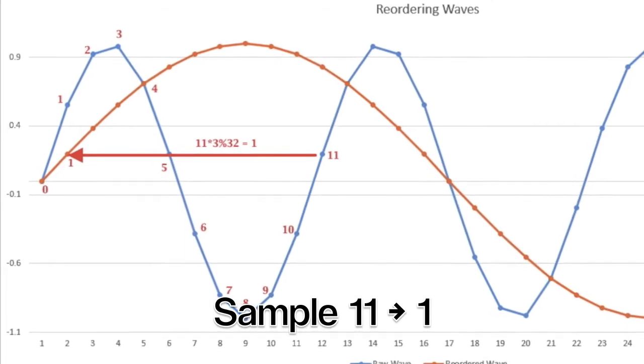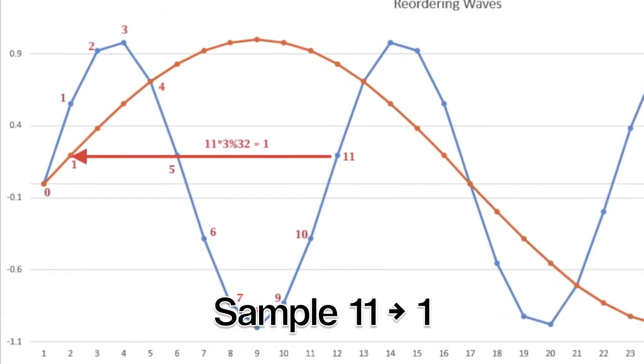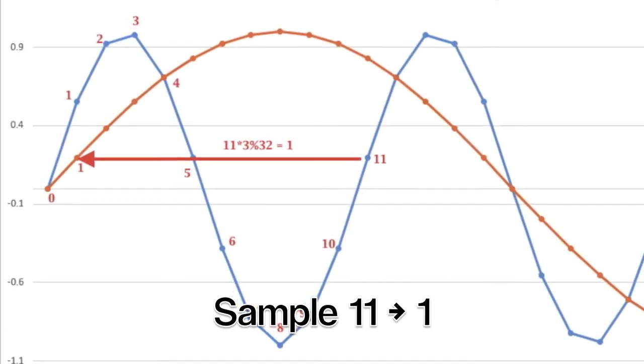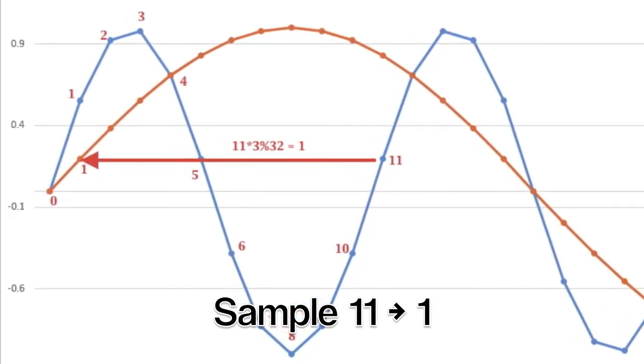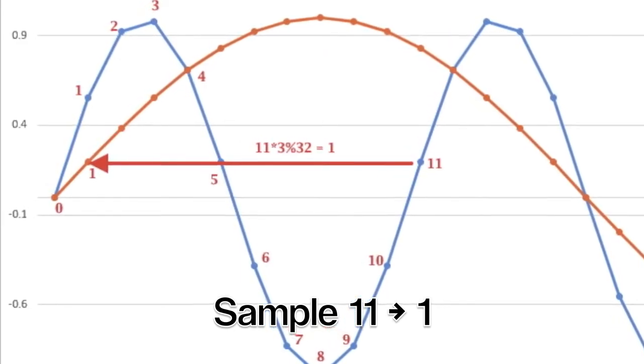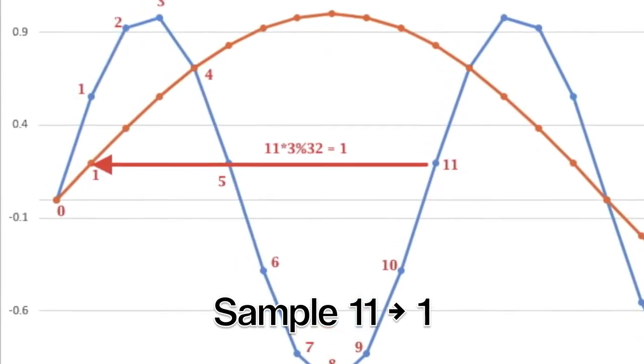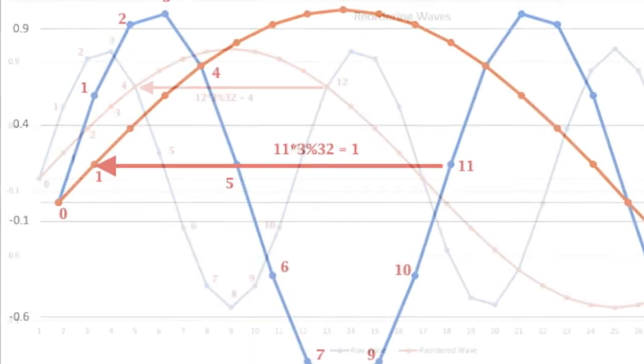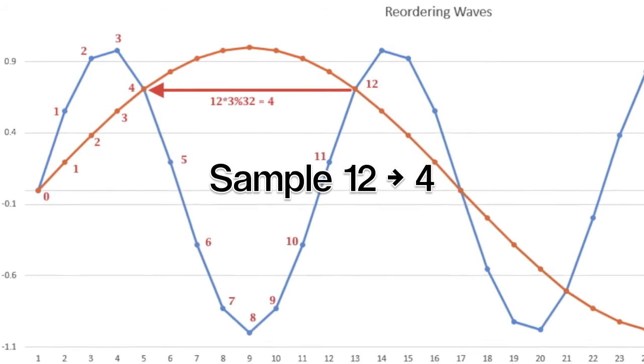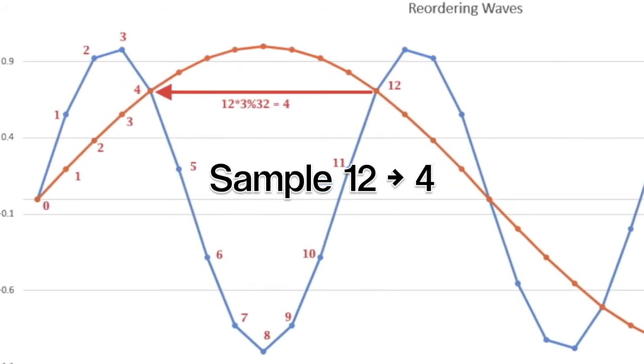Eleven times three is thirty-three. And that is larger than our output array of thirty-two samples. But the modulo operator gives us the remainder of a division. So thirty-three modulo thirty-two is one. And that is where sample eleven belongs. It's sample number one back at the beginning of the single cycle wave. Twelve times three is thirty-six. But thirty-six modulo thirty-two is four. So sample twelve goes back to sample four.